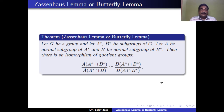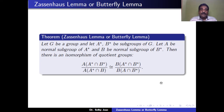Let G be a group and A*, B* be subgroups of G. A is a normal subgroup of A* and B is a normal subgroup of B*. Then there is an isomorphism of quotient groups: A(A* ∩ B*) mod A(A* ∩ B) is isomorphic to B(A* ∩ B*) mod B(A ∩ B*).